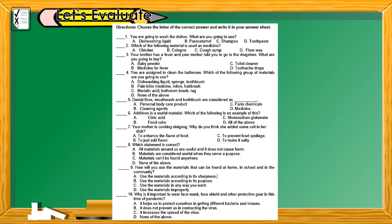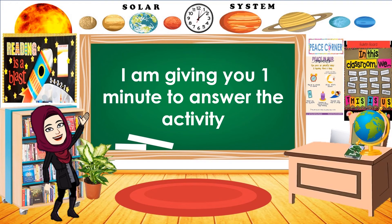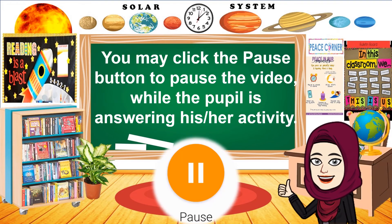For our next activity, let's answer let's evaluate. Directions: Choose the letter of the correct answer and write it in your answer sheet. You need to read the question before answering and write the letter in the space provided. Are you ready? I'm giving you one minute to answer the activity.